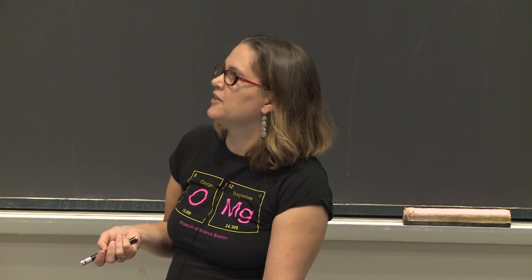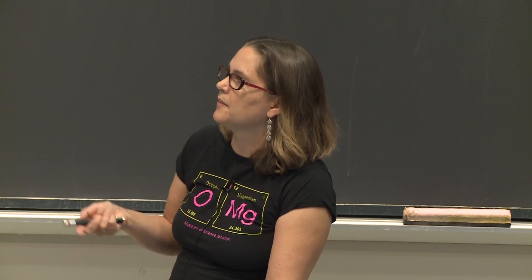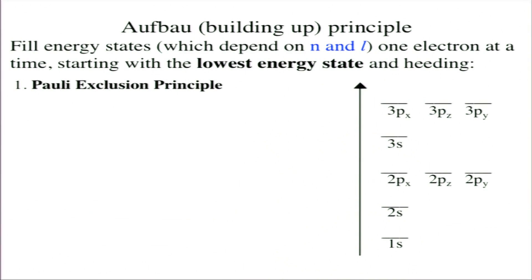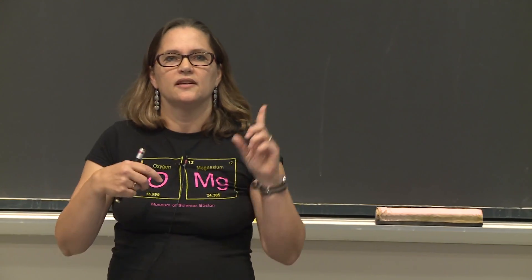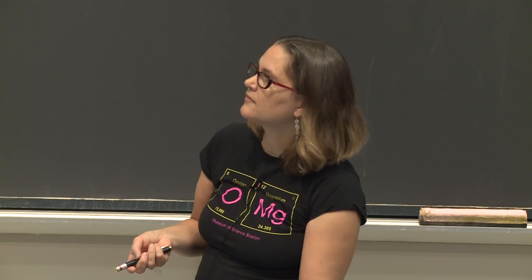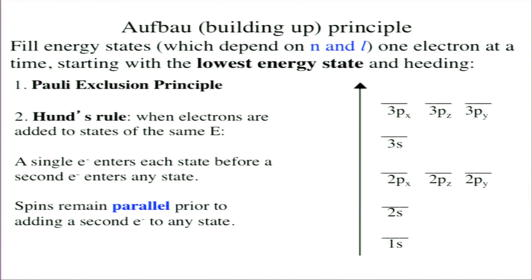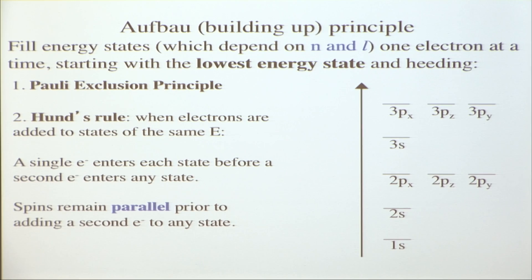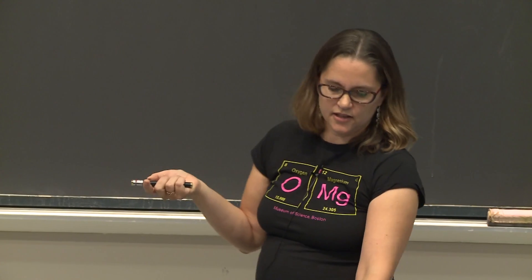We put electrons in one at a time starting with the lowest energy state, heeding the following rules. Pauli's exclusion principle says you can't have the same four quantum numbers — so if one electron is spin up, the next must be spin down. Hund's rule: when adding electrons to degenerate energy orbitals, put them in singly before a second one enters the same orbital, and spins remain parallel as you add them across.